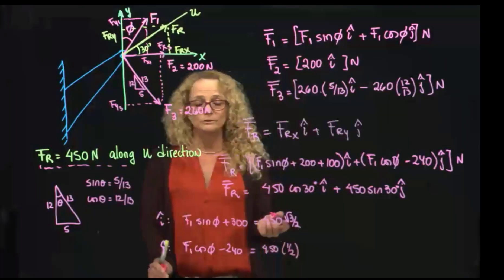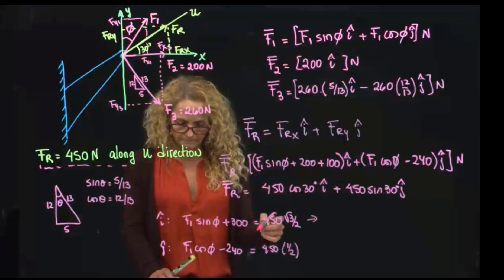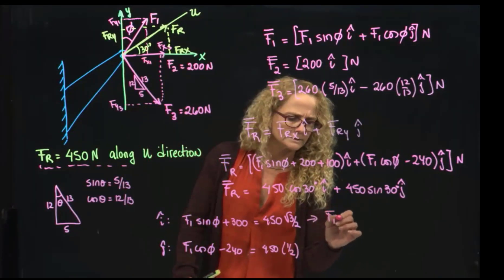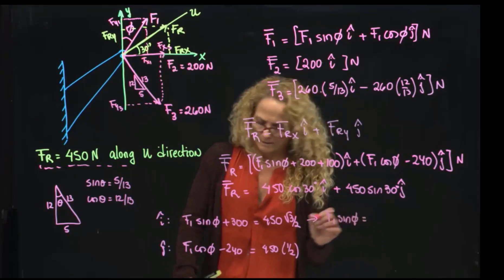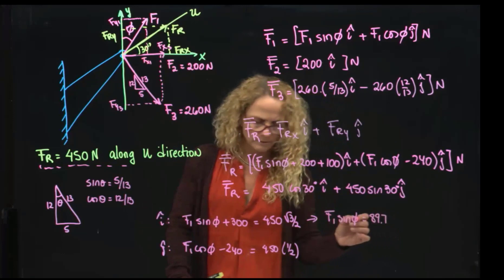Okay, as you see, from here we can solve for sine, and then we can solve for F1 sine of phi, which equals 89.751.